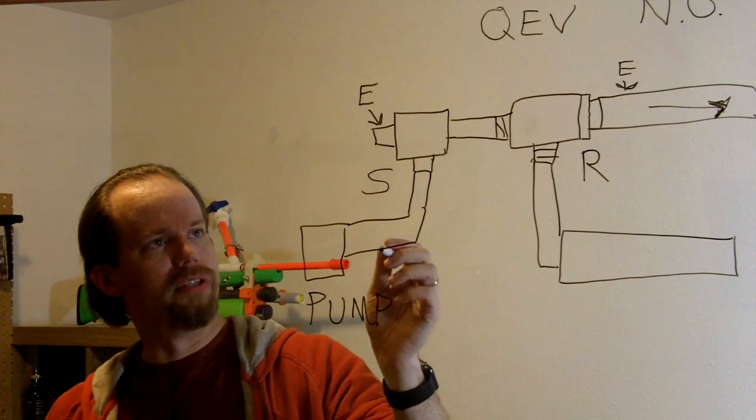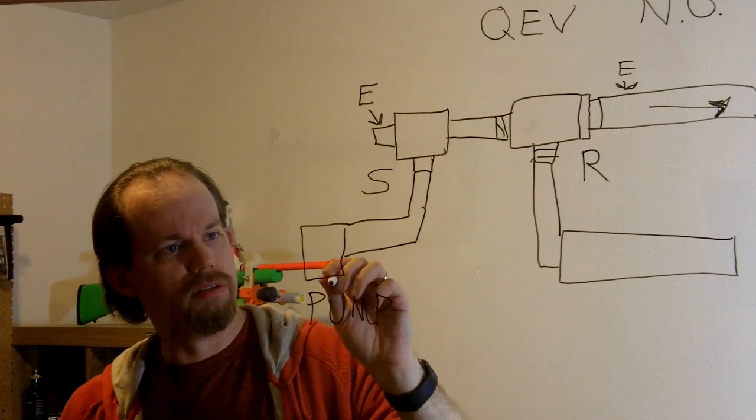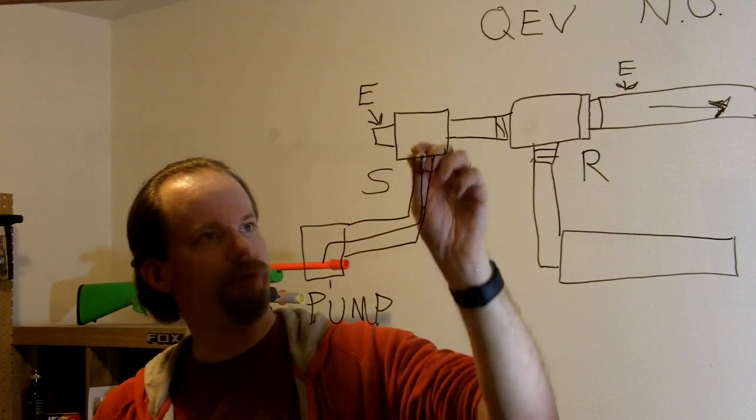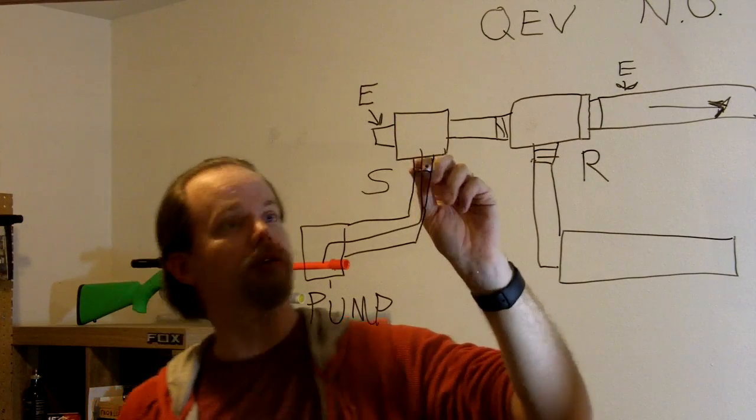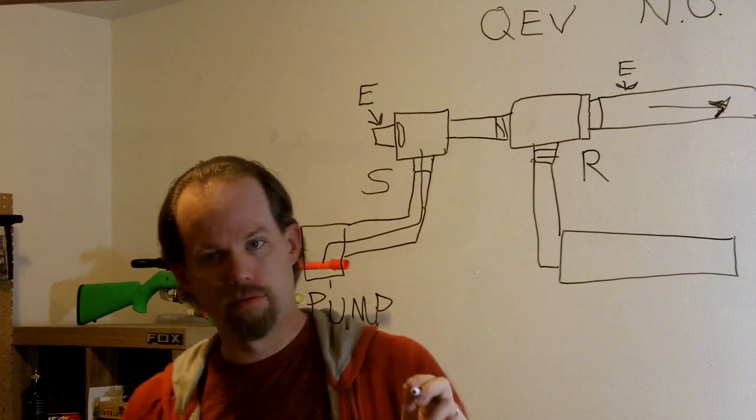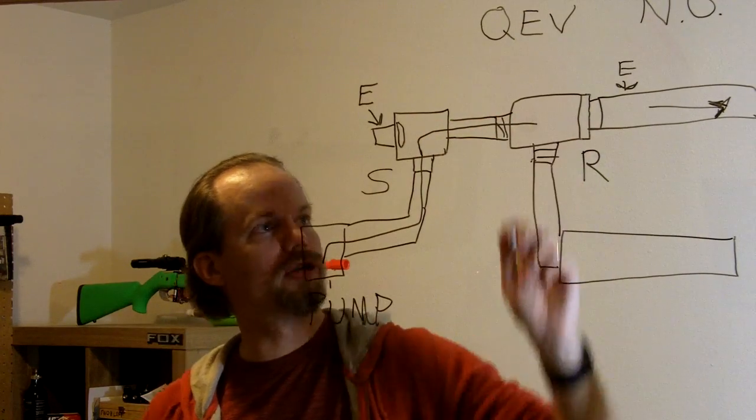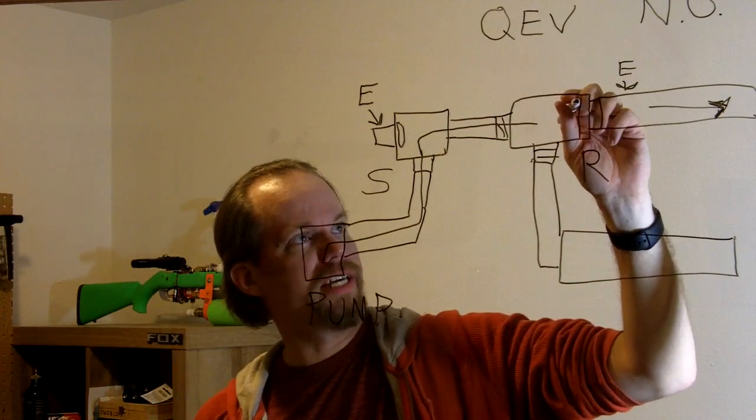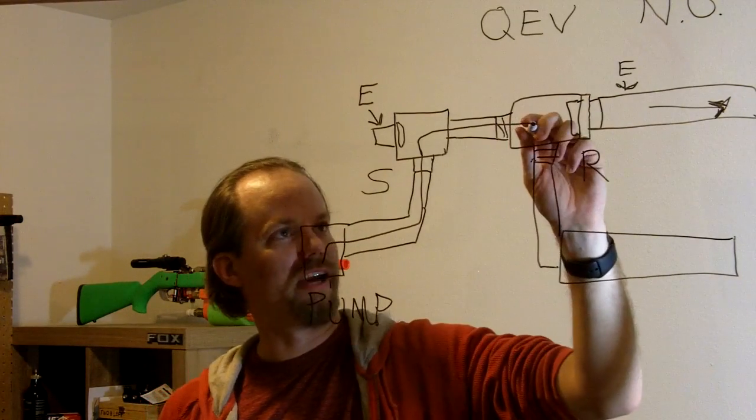Anyway, so the way this works is you're going to send air through the pump, through the QEV, or sorry, your three-way valve, which is currently going to be blocking this side off, blocking that off, your exhaust off. So what's going to happen is it's going to go in and it's going to go to the QEV. But the QEV is going to be blocked on the exhaust side just like that one, so the air is going to go and fill your tank.